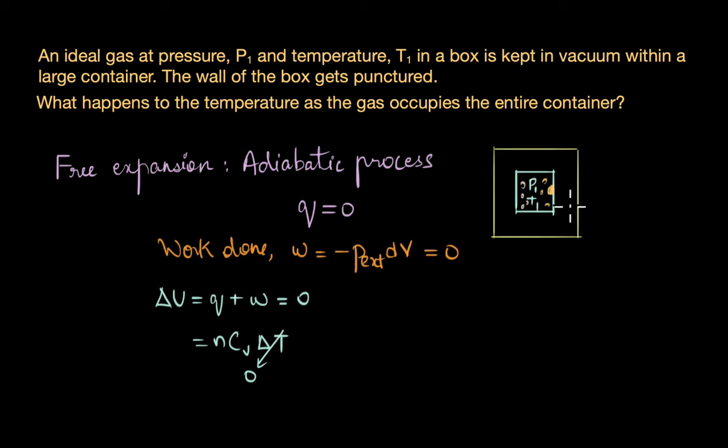This is because when the number of gas particles and temperature remain constant, pressure becomes inversely proportional to volume. This is why pressure decreases as the gas particles expand and occupy the entire container, or as the volume increases. The final conditions of the system would be: temperature is constant, so final temperature is same as the initial temperature T1.